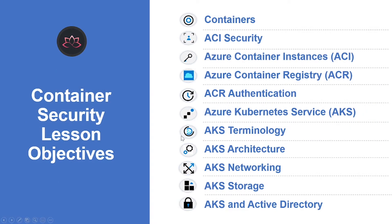Let's have a high level look at the things we're going to learn in this video. We will start with what are containers and how they work. Then we will learn about ACI, which is Azure Container Instances, and AKS, which is Azure Kubernetes Services — the terminologies, architecture, networking, storage, and how AKS and Active Directory work together. So without wasting any more time, let's get into it.